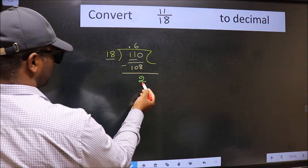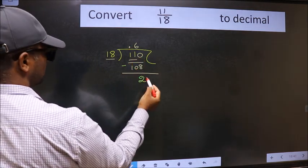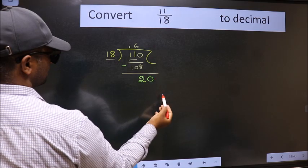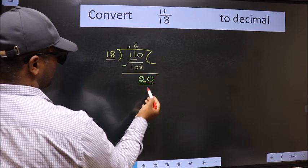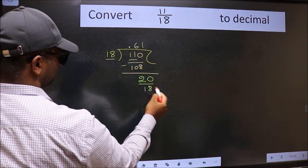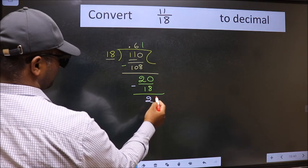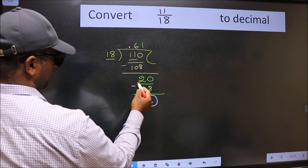2 is smaller than 18 and we already have the decimal, so this time directly take 0, so 20. A number close to 20 in 18 table is 18 once 18. Now we should subtract, we got 2 again.